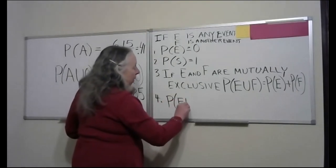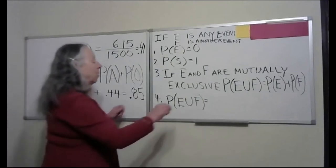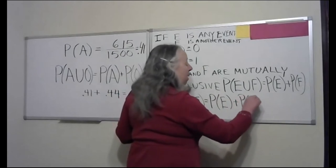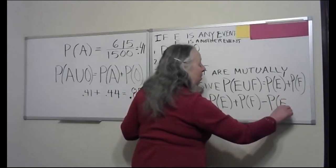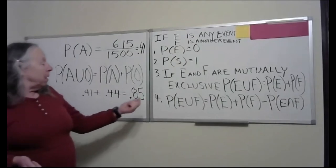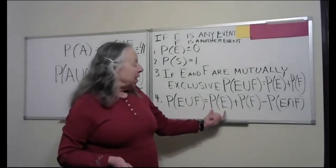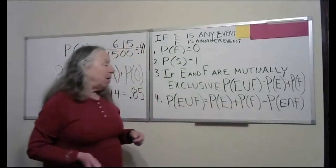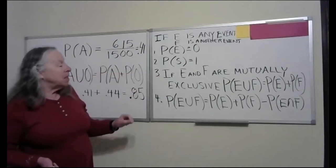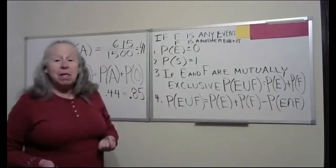A more general rule: just like the number of elements in a union equals elements in the first set plus the second set minus the intersection, the probability of E union F equals the probability of E plus the probability of F minus the probability of the intersection. Rule three is the special case where E and F are mutually exclusive, meaning their intersection is the empty set, and the probability of the empty set is zero.